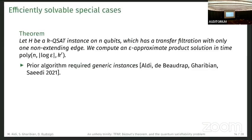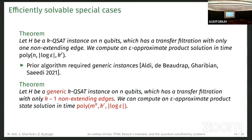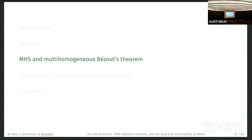The only difference to the prior algorithm is that this one works for any instance, so there's no genericity assumption. That was by Baldi, Gharibian, and Saeed. We can also extend it if we have K QSAT, we can support K minus one non-extending edges, but then we also need the genericity assumptions again. The runtime is also exponential in K.